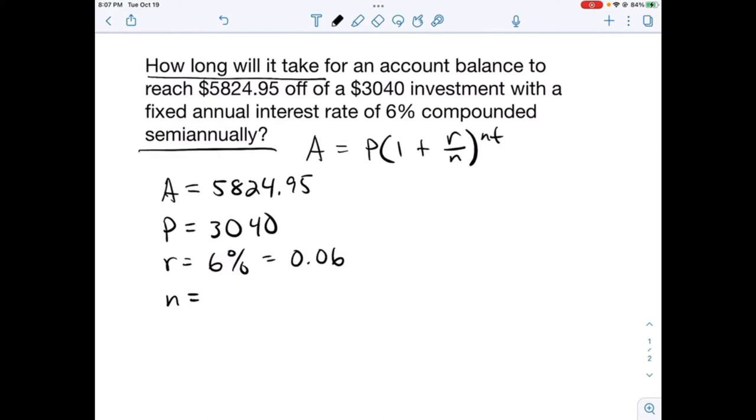N is how often it is compounded. In this case, it says compounded semi-annually. Semi-annually simply means two, so that's twice a year or every six months. Time is what we are looking for.